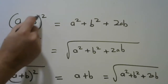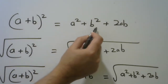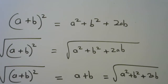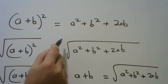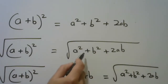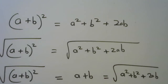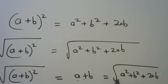When you expand a plus b all squared, you get a squared plus b squared plus 2ab. If you take the square root of a plus b all squared, it's the same as the square root of a squared plus b squared plus 2ab. And you know that the square root of a plus b all squared equals a plus b. This implies that a plus b is the same as the square root of a squared plus b squared plus 2ab.